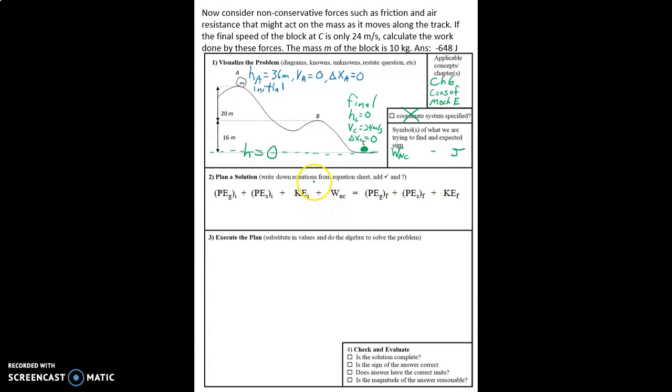So we have our conservation of mechanical energy equation here, all seven terms, just like on your equation sheet. At the beginning, yes, there is going to be gravitational potential energy. There's no spring potential energy initial, because there's no springs.